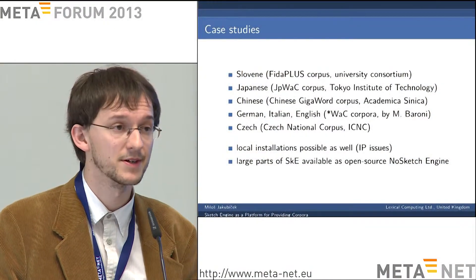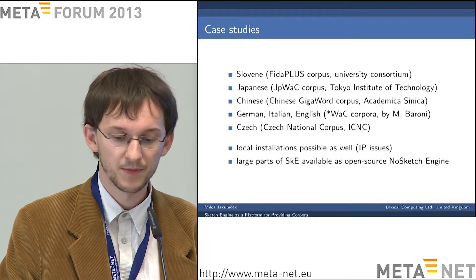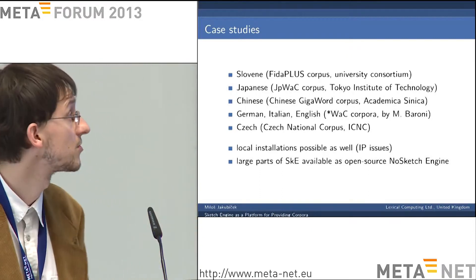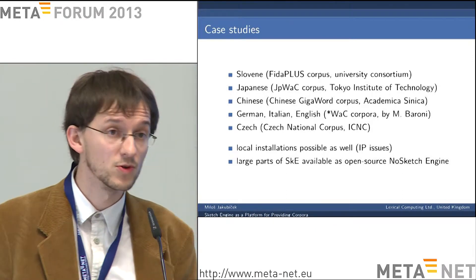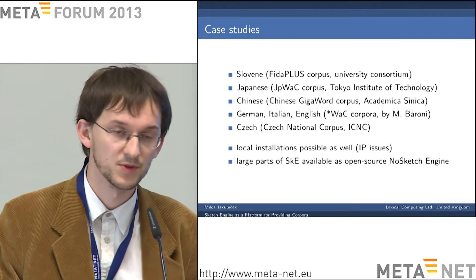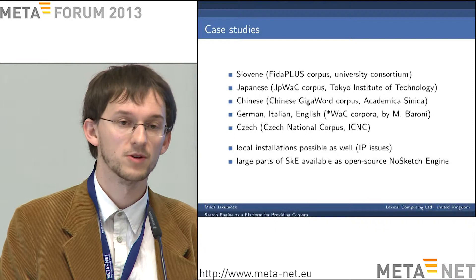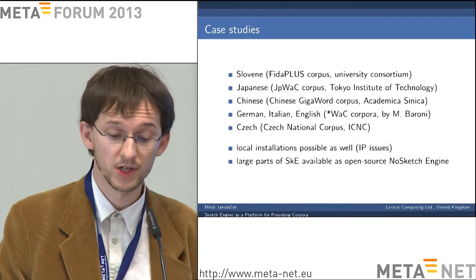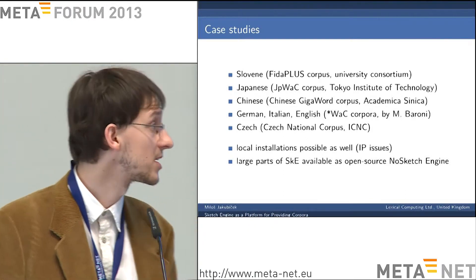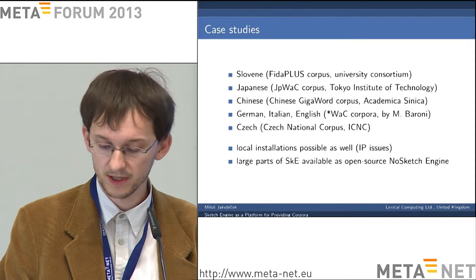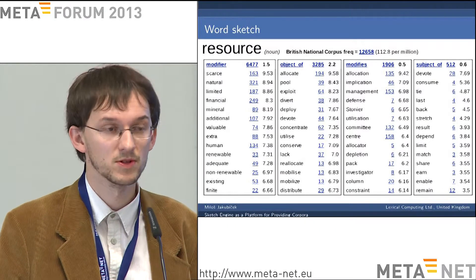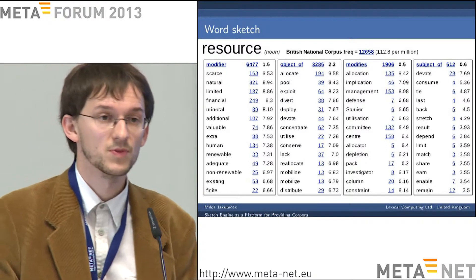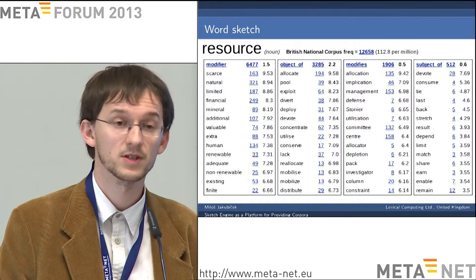We already have a number of use cases where people showcase their resource via our Sketch Engine system. I've listed only a few here — it was the case of Slovene, Japanese, Chinese, German, and Czech. We also offer local installations to people because sometimes there are IP issues. People are not sure whether they can give the resource to a third party, or they are just not willing to. A large part of the Sketch Engine system is available as open source — basically everything besides the word sketches. So all the concordancing and query functionality is available as open source, and anybody can download it and set it up on their own.